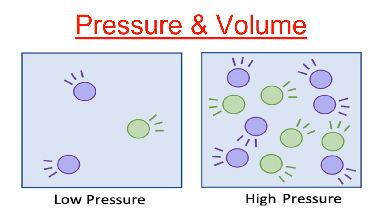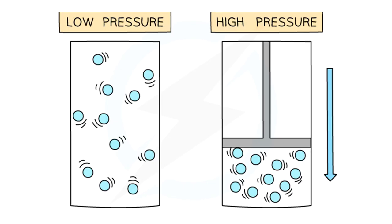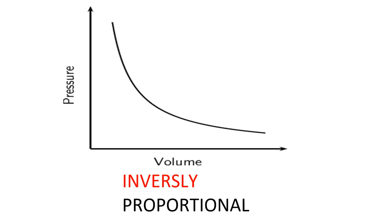Pressure and volume are inversely proportional. At large volume, particles have lots of space and rarely collide with the container walls — low pressure. When squeezed to a smaller volume, particles collide with the walls more frequently — higher pressure. The larger the volume, the lower the pressure; the smaller the volume, the higher the pressure.